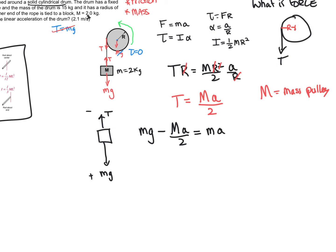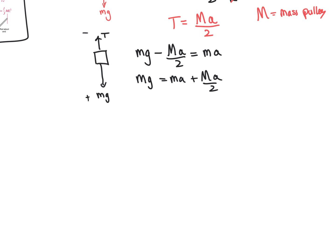And we can actually now solve for this acceleration. So we get mg equals ma plus big M a all over 2. We're now going to pull out this a. So we get mg equals a times m plus M over 2. And we can just now solve for that a.